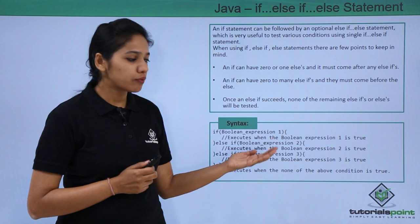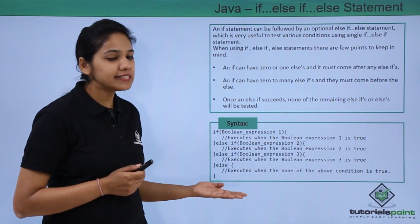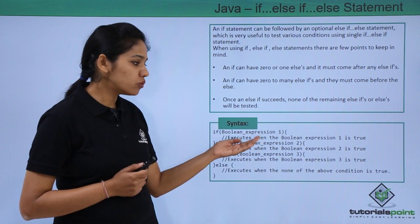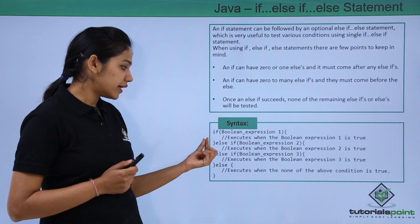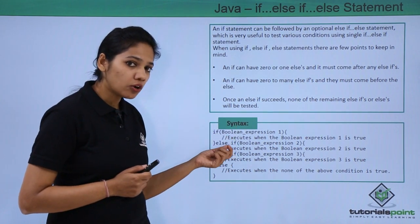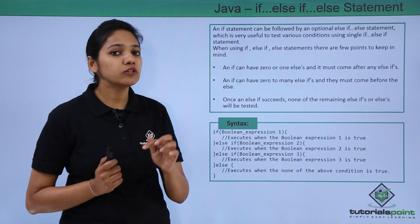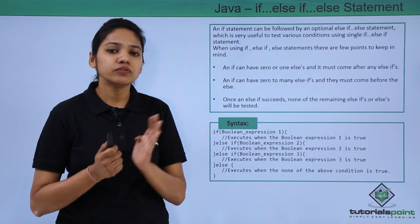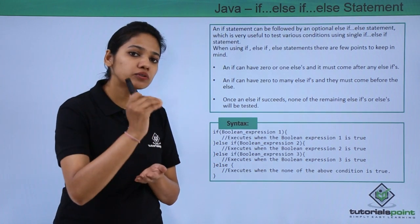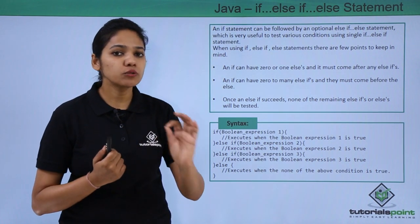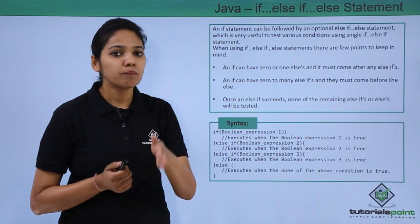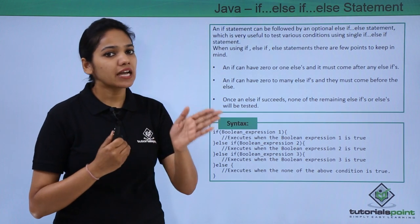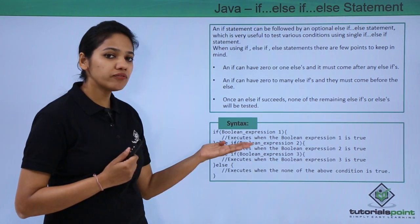Let us understand the syntax of if-else-if-else. Use the keyword if with a boolean expression in brackets; if true, execute that block. If not true, instead of going directly to else, you have else-if blocks. Think of it like traveling from a source to a destination — there may be several paths available, path A, B, C, D, and you choose one depending on a condition. The if-else-if-else statement works similarly.